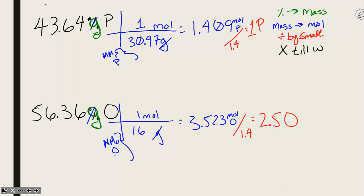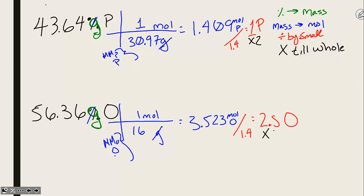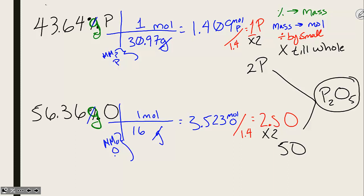Step 4 — multiply till whole: multiply until you end up with a whole number ratio, where the first decimal place is 0, 1, 8, or 9. Multiply by 2 first; if that doesn't work, try 3, then 4, then 5 — but if you have to go past 5, you may have made an error. Multiplying by 2: 1×2 = 2 phosphorus, 2.5×2 = 5 oxygens. The empirical formula is P2O5.